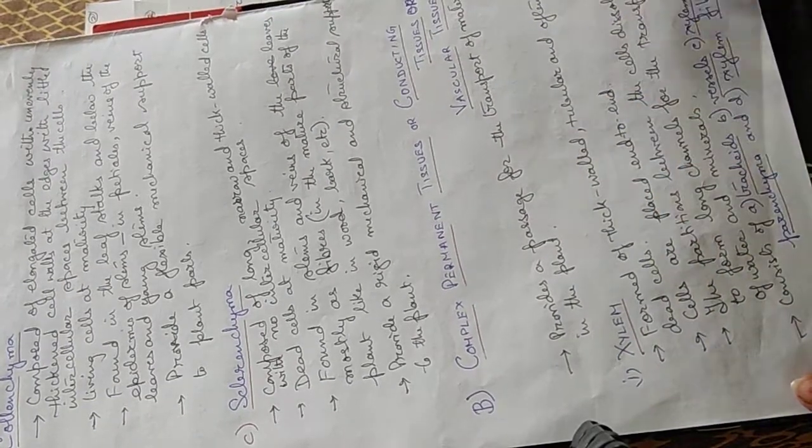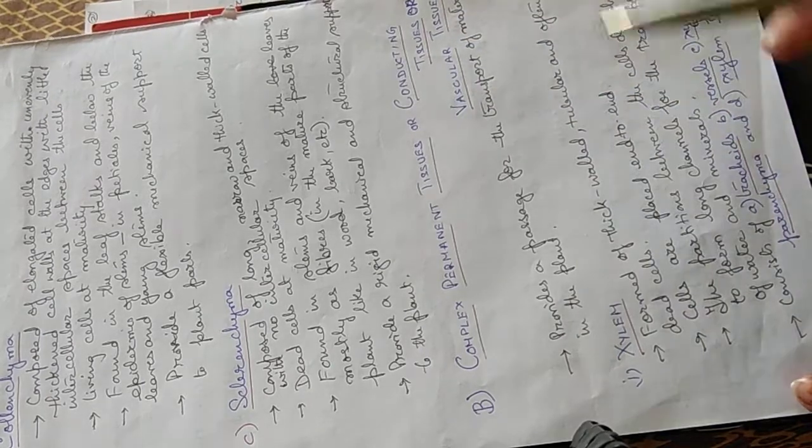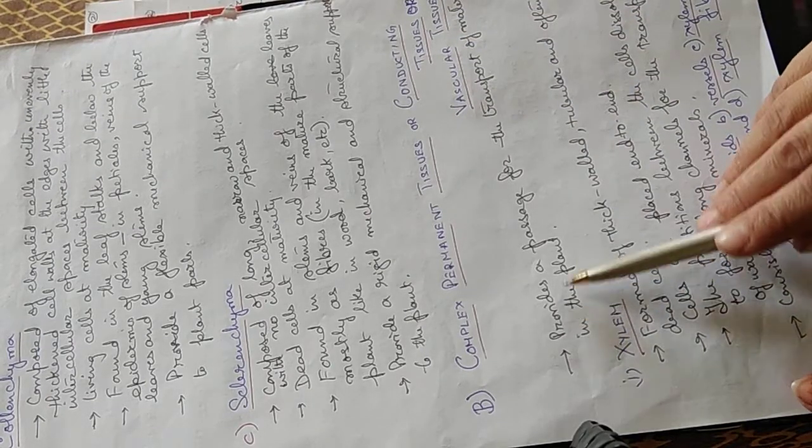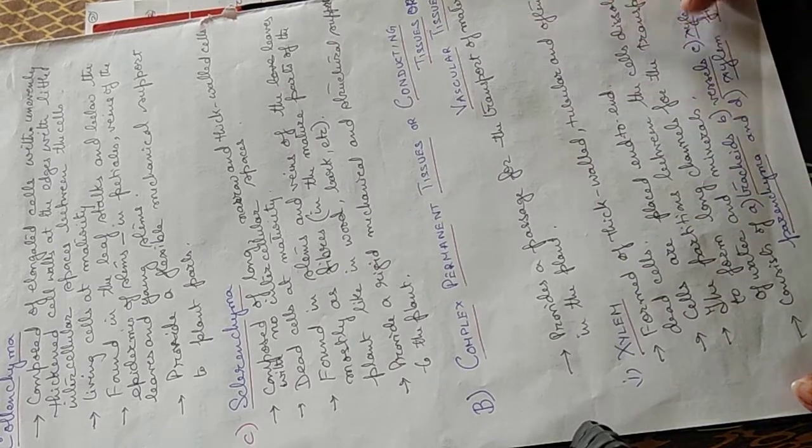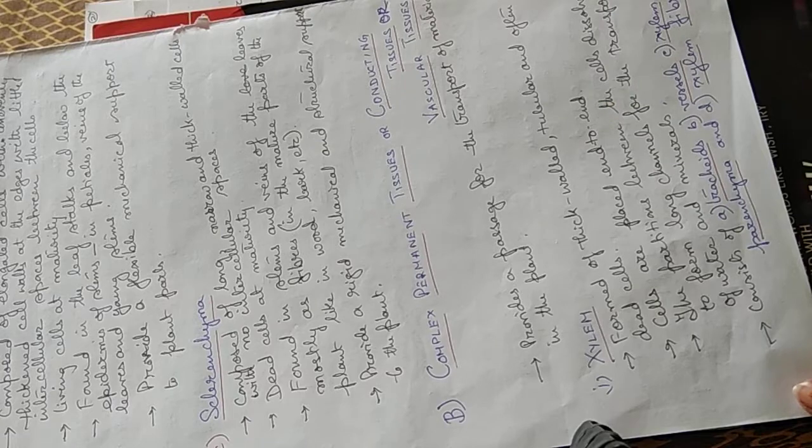The complex permanent tissues, they are also called conducting tissues or vascular tissues. They provide a passage for the transport of materials in the plant. They are of two types, xylem and phloem.